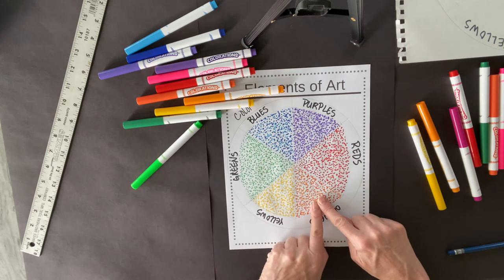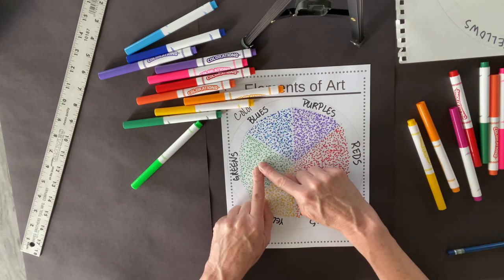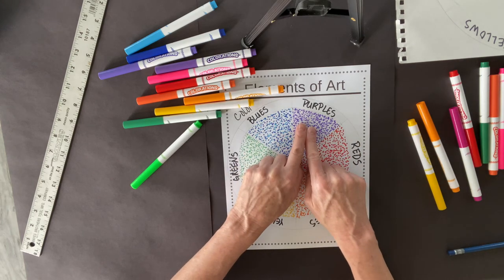Red and yellow make orange. Yellow and blue make green. Blue and red make purple.